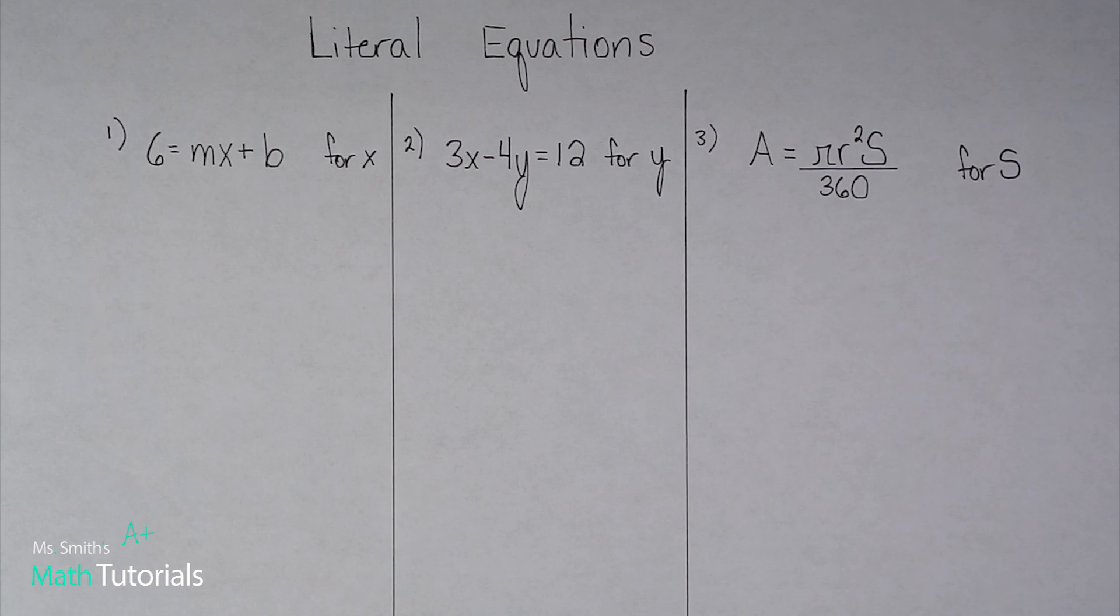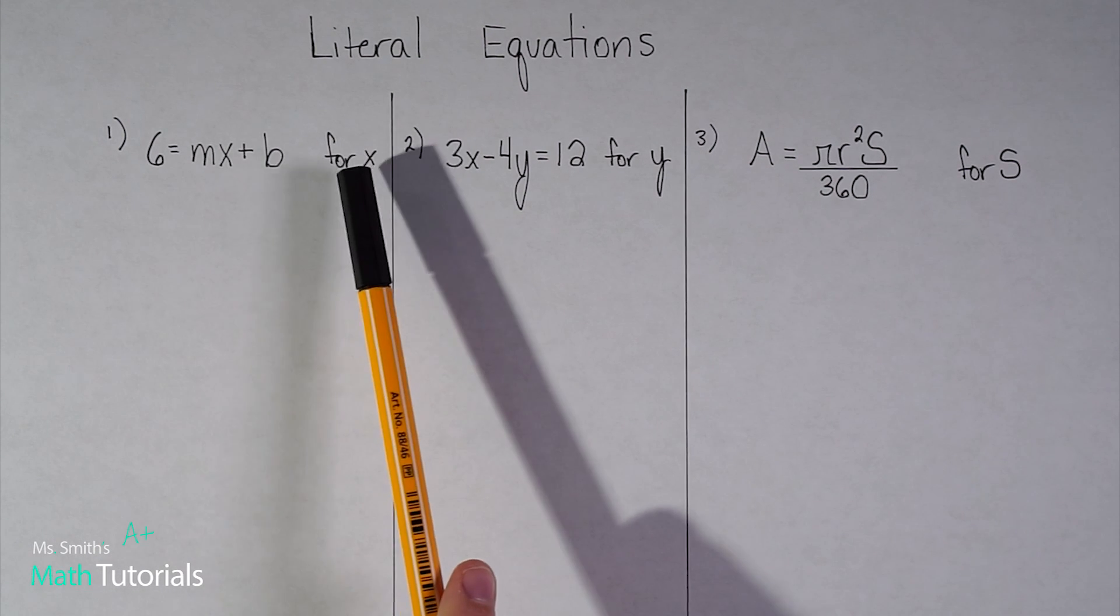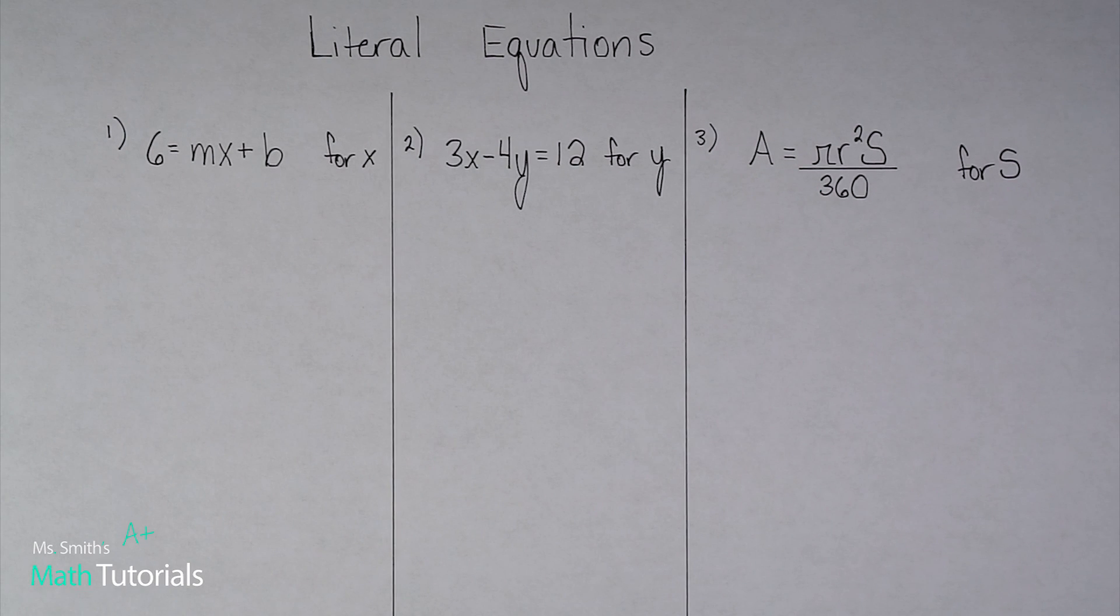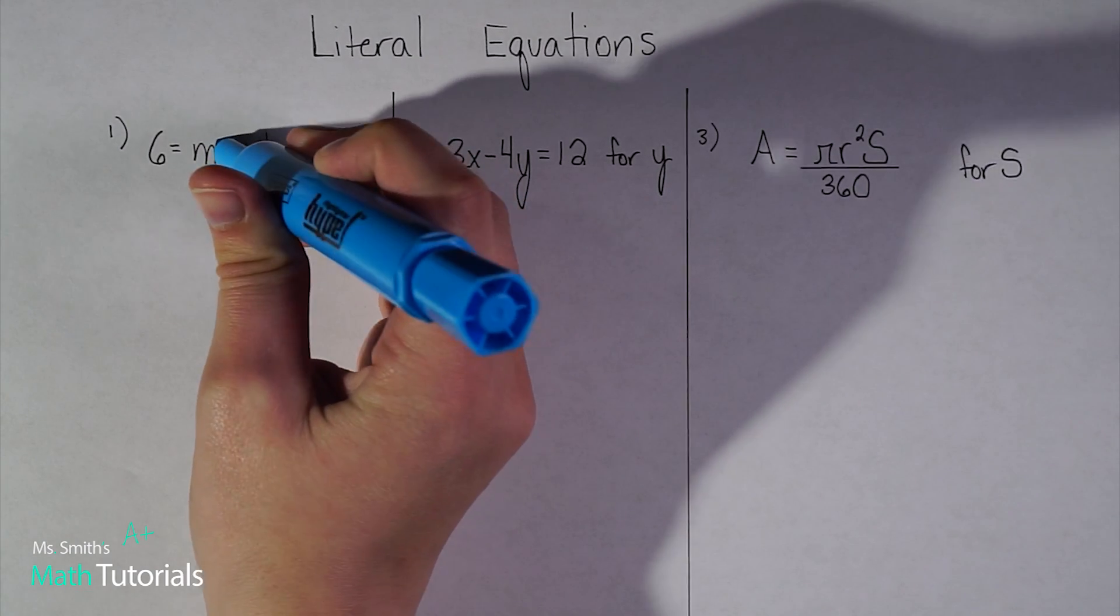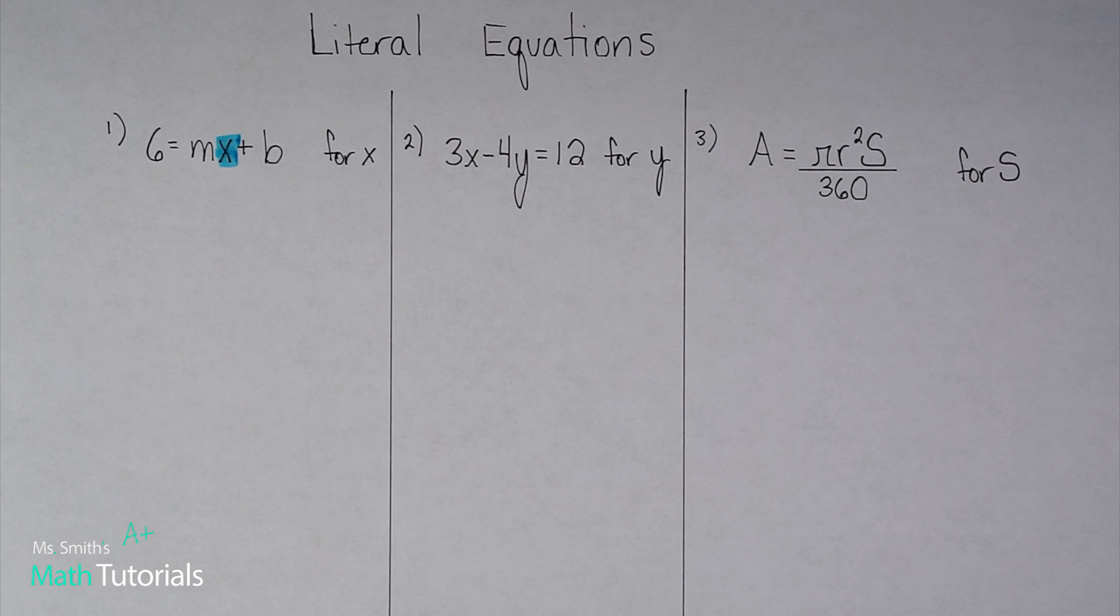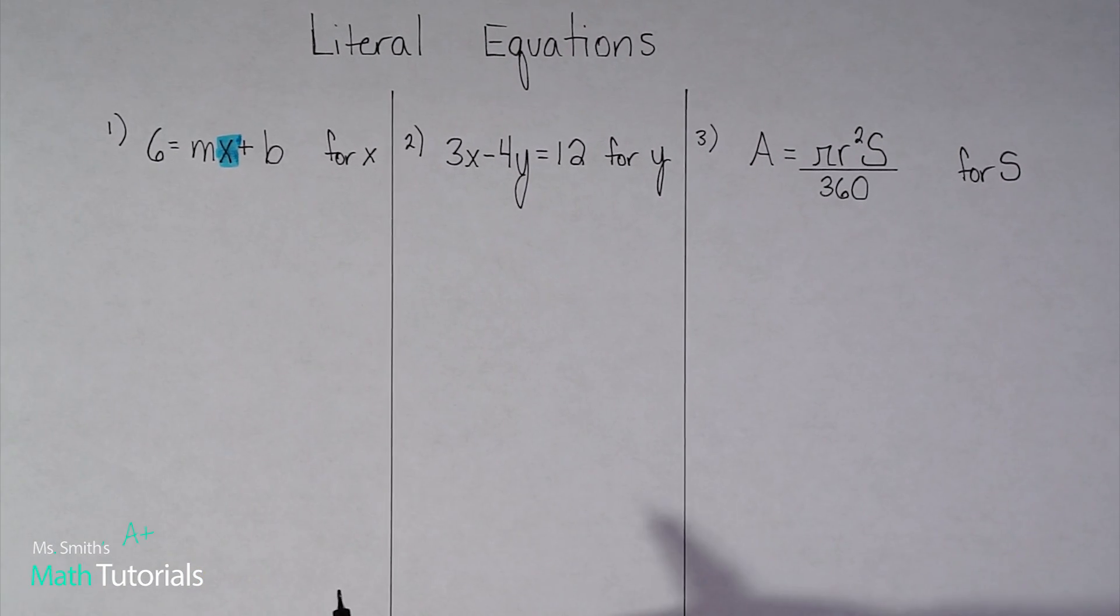Now, it'll tell you what it wants to solve for. So in number one, you'll see it wants you to solve for x. But you've got some other variables thrown in there, so you're not going to be able to get a really nice, pretty x equals three. It's going to be a little messier, but your goal is really just to isolate the variable that they're asking for.